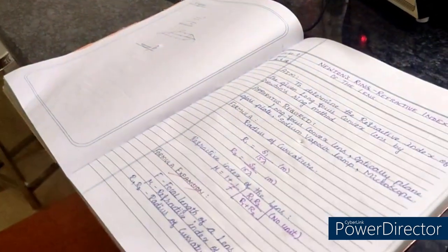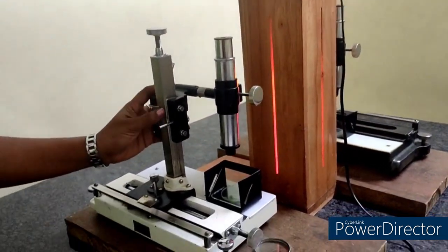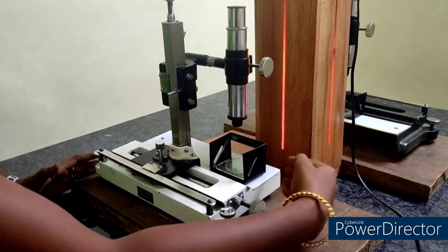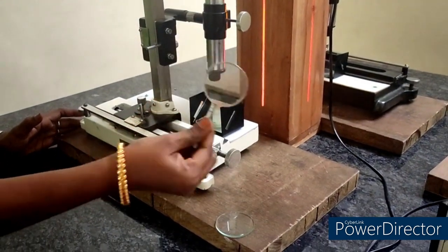For that we need some apparatus: sodium vapor lamp, vernier microscope, and this landing glass to place the lens. To see the readings we need to zoom in lens.